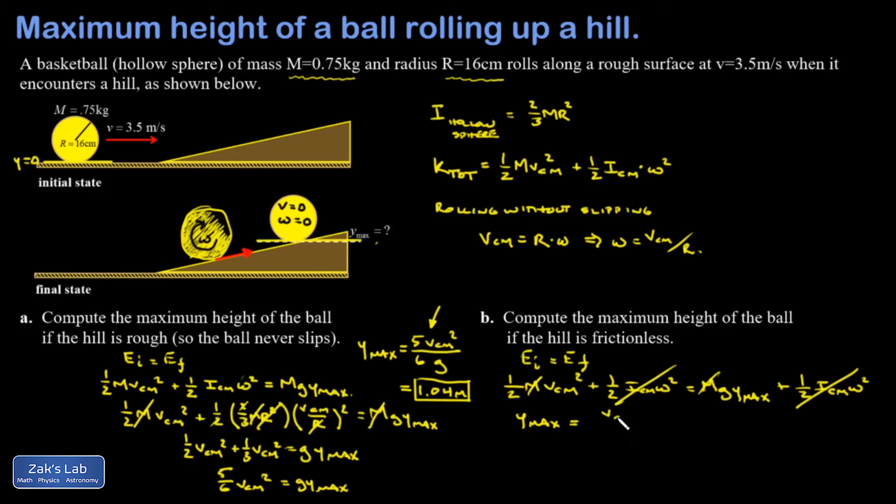This time it's V center of mass squared over 2g. So that original speed, three and a half squared over twice 9.8, and for my maximum height I get 0.63 meters.